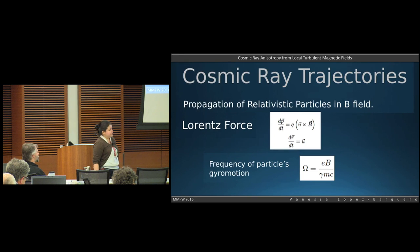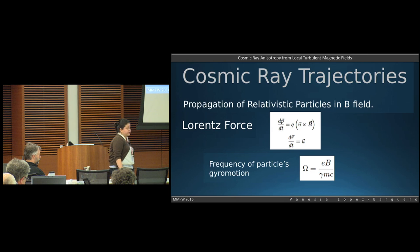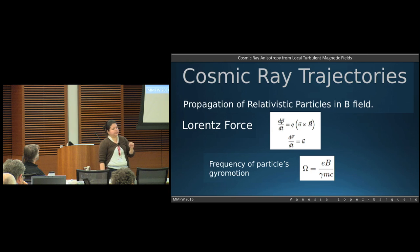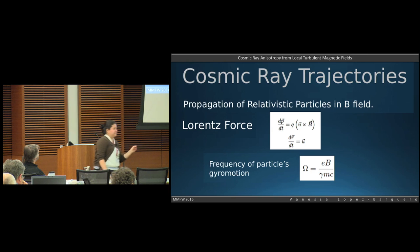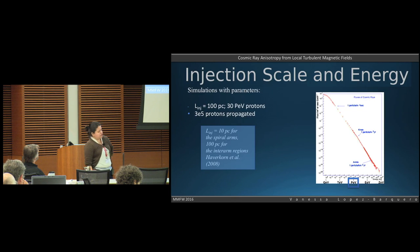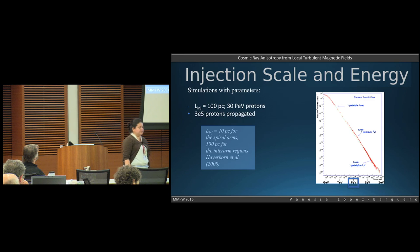We have relativistic particles here, so we're dealing with PeV particles. The way we calculate trajectories is of course with the Lorentz force. What we do is take a point, interpolate the magnetic field at that point, and based on that magnetic field, the next step the particle takes is determined by the Lorentz force.